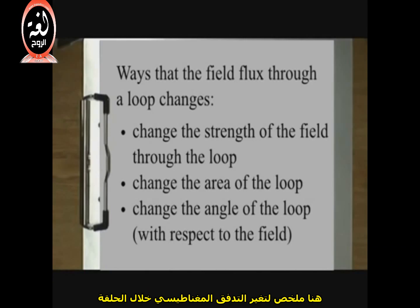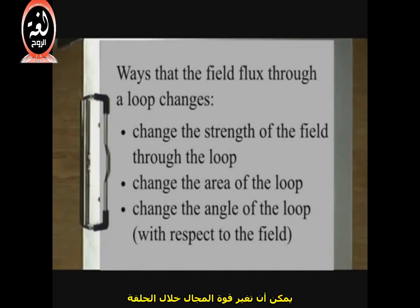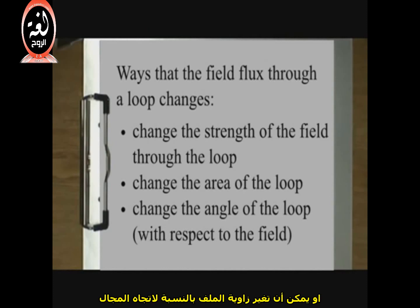Here is a summary of the ways that the magnetic flux through a loop changes. You can change the strength of the field through the loop, like we did by moving the loop closer to the magnet. You can change the area of the loop. Or you can change the angle of the loop with respect to the direction of the field.